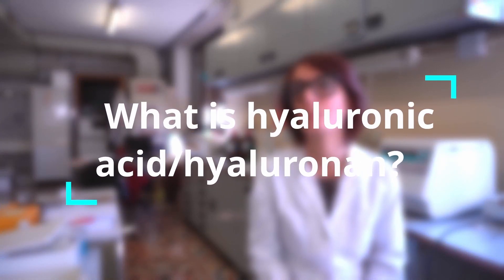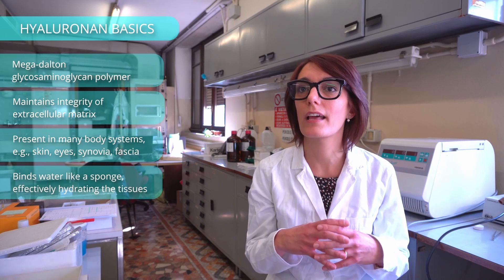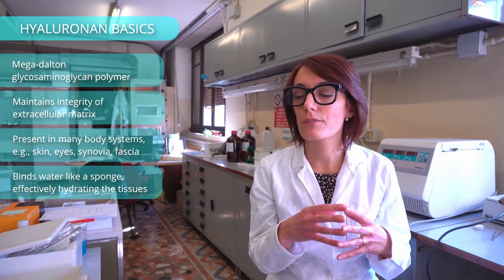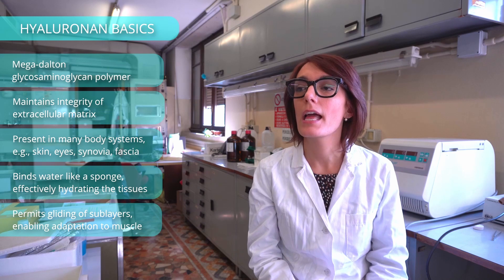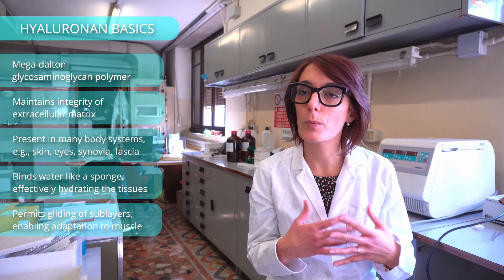What is hyaluronic acid or hyaluronan? The hyaluronan is a megadalton glycosaminoglycan polymer. Its role is critical to maintain the integrity of the extracellular matrix. It is synthesized by the cells and it is present in different parts of the body — in the skin, in the eye, in the synovia, and also in the fascia. You can think about the hyaluronan like a sponge that is able to link the water molecules and so to hydrate the tissue. In the fascial tissue specifically, it permits the gliding of the sublayers of the fascia.